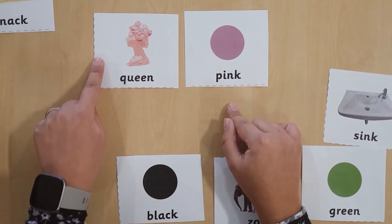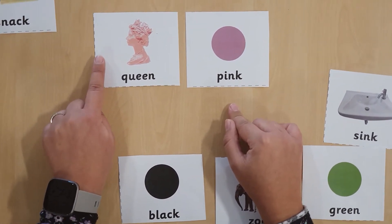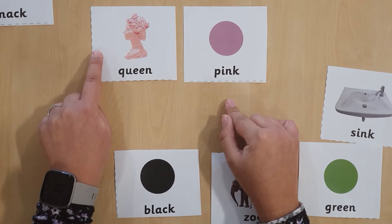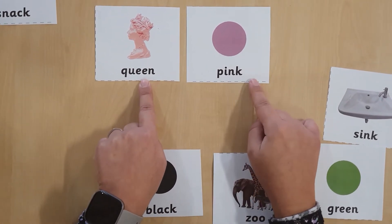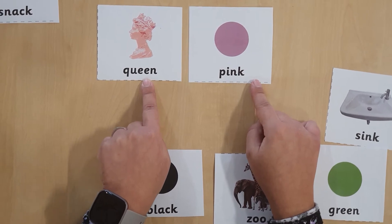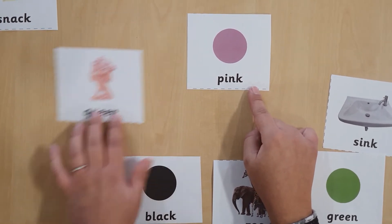Oh, what is that? Can you sound that word out? Yes, that's right, it's a queen. So queen and pink. Hmm, nope, that's right, it's not a pair.